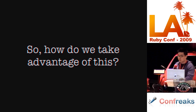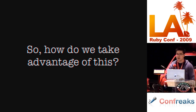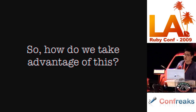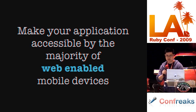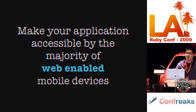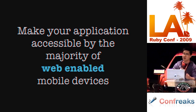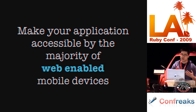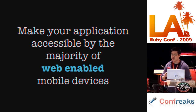The question here is: how do we actually take advantage of this? How do we make it so that people can reach your application and interact with it — especially when they have a mobile device and some sort of internet connection? You want to make your application accessible by the majority of web-enabled mobile devices — phones that actually view HTML and access via HTTP, not just WAP.